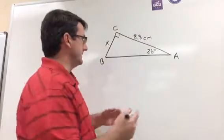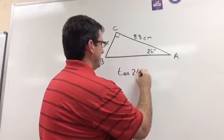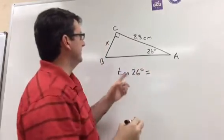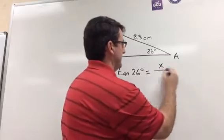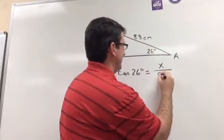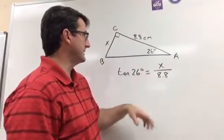So the tangent of 26 degrees is equal to the opposite side, which is what we're trying to find, x, divided by the adjacent side, which is 8.8 centimeters. Now to solve for x, we're going to multiply both sides by 8.8.